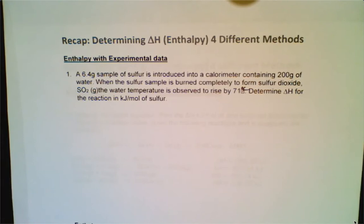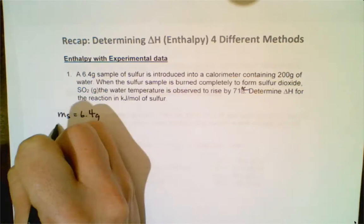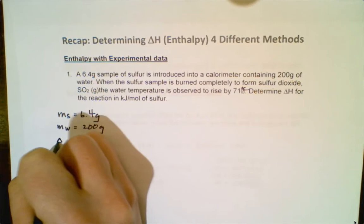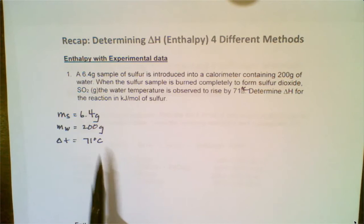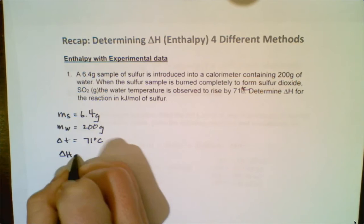I'm going to write down what is given. The mass of sulfur is 6.4 grams, the mass of water is 200 grams, and the change in temperature is 71 degrees. It rose 71 degrees, so final minus initial — it doesn't matter what initial and final temperatures you pick as long as the change is 71. What they're looking for is delta H of the combustion reaction for sulfur.